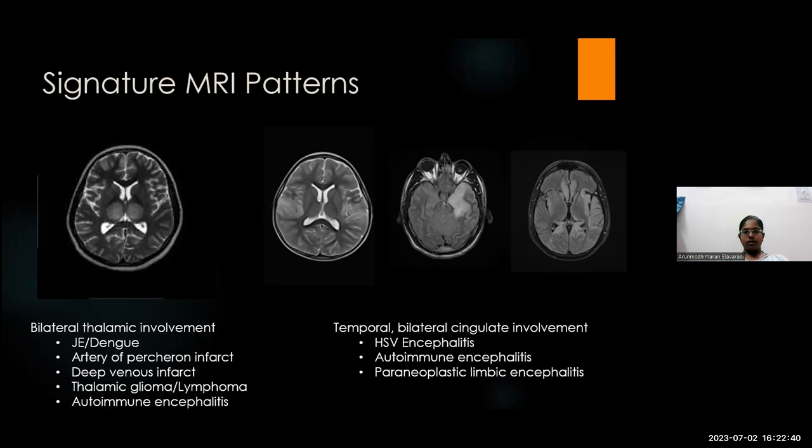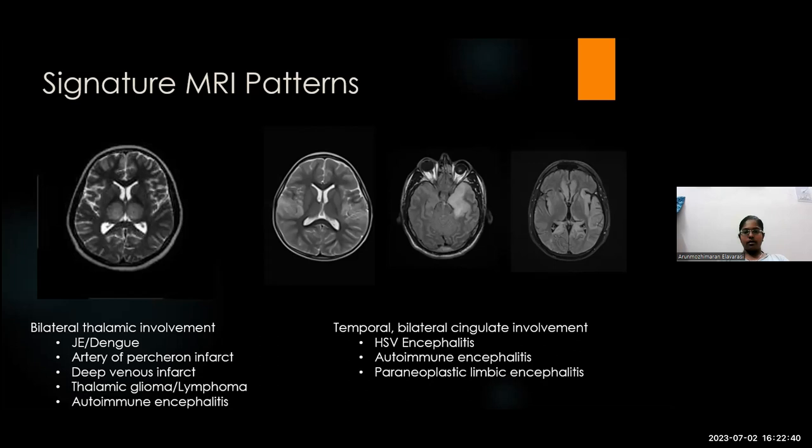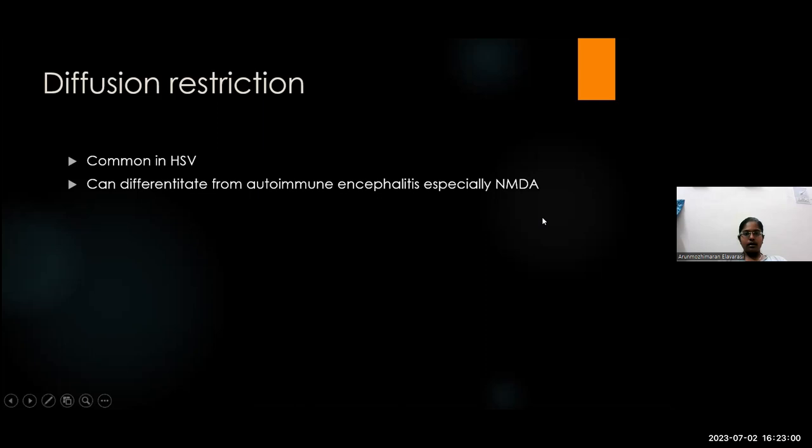Autoimmune encephalitis and paraneoplastic limbic encephalitis can also have an exactly similar MRI picture. However, diffusion restriction is quite common in HSV and helps differentiate it from autoimmune encephalitis, especially NMDA encephalitis. In NMDA encephalitis, diffusion restriction is usually not seen, so its presence is highly characteristic of HSV encephalitis.